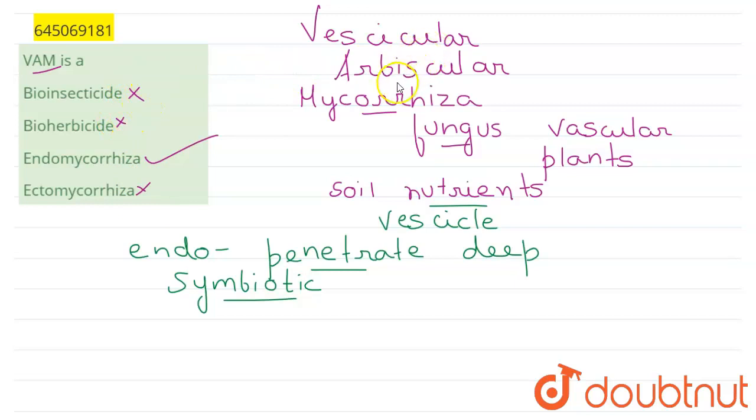So VAM, which is vascular arbuscular mycorrhiza, it is a type of endomycorrhiza. I hope this solves your doubt. Thank you.